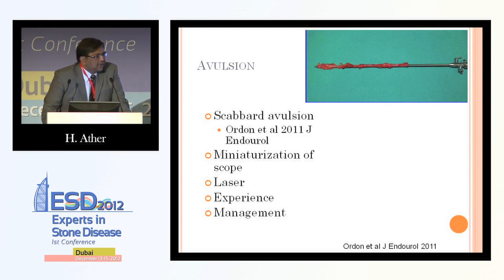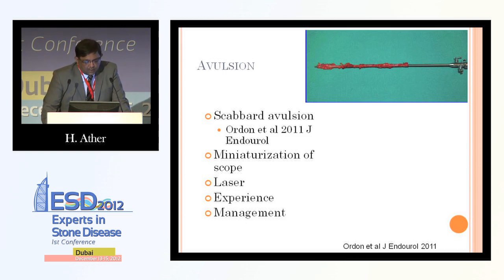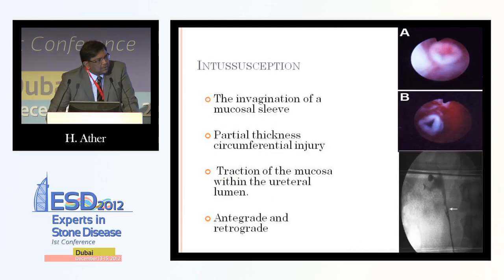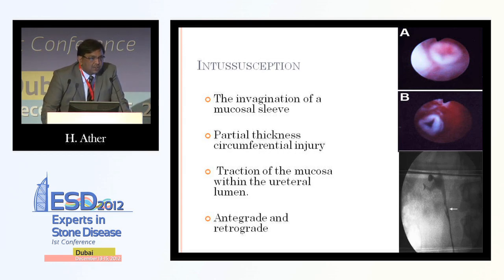You may end up doing a nephrectomy, or some reconstructive procedure depending upon the extent of injury, including ileal interposition or transuretero-ureteroscopy. Intussusception, which is relatively much less common than avulsion injury, is the invagination of the mucosal sleeve, resulting in partial circumferential injury of the ureteral mucosa and traction of this mucosa within the ureteral lumen. It can occur in both anterograde and retrograde procedures.